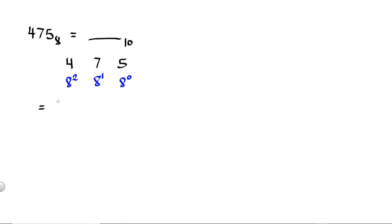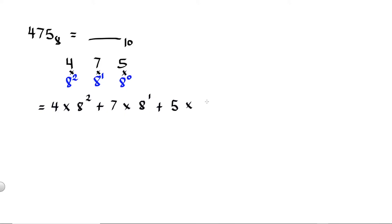Next, we are going to multiply 4 by 8 raised to 2. So this is 4 times 8 raised to 2, plus 7 times 8 raised to 1, plus 5 multiplied by 8 raised to 0.